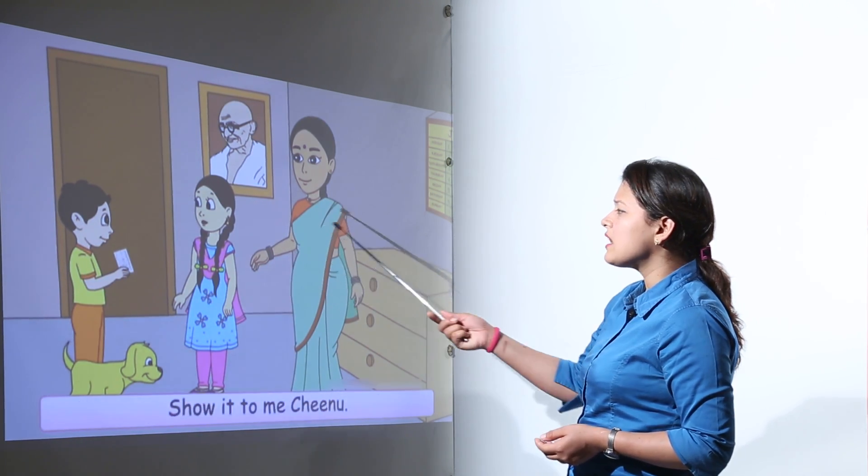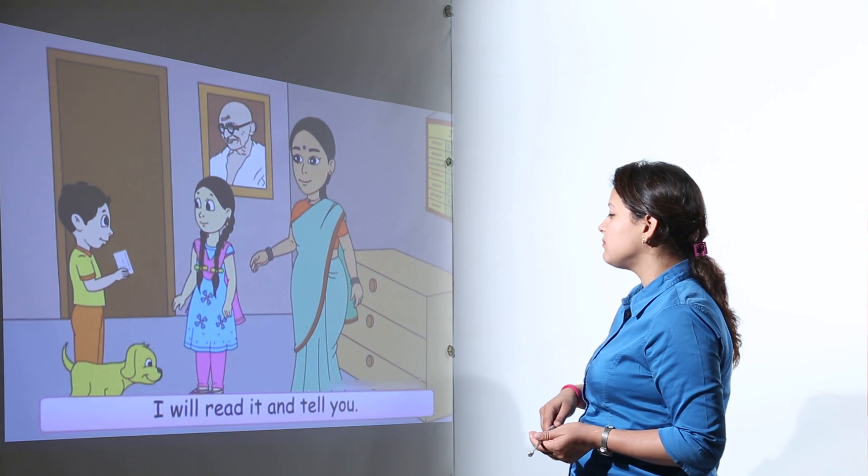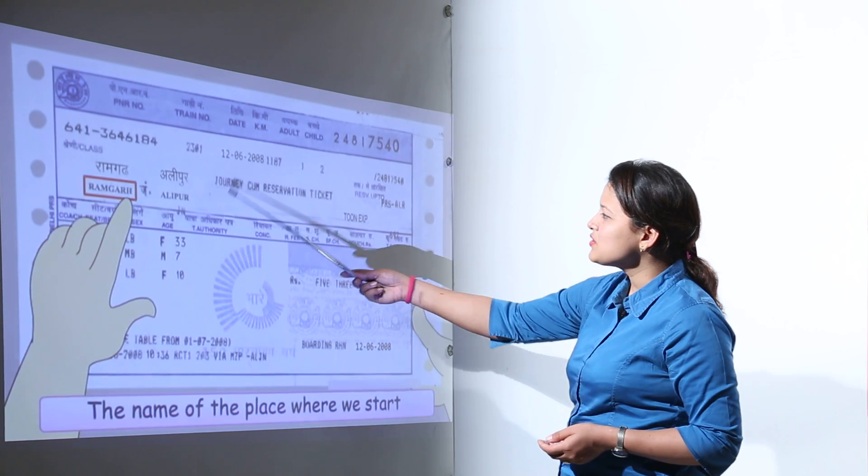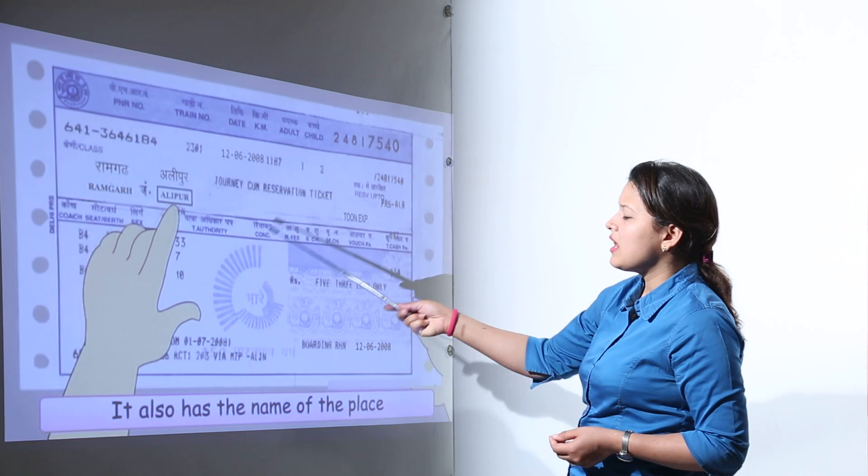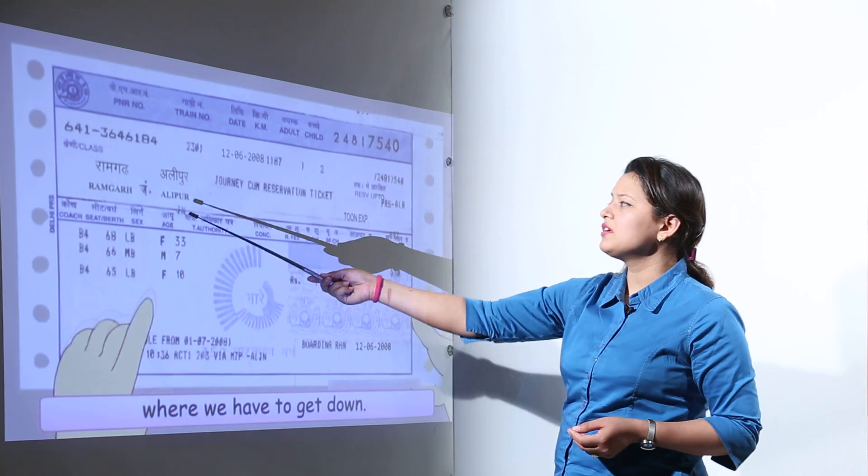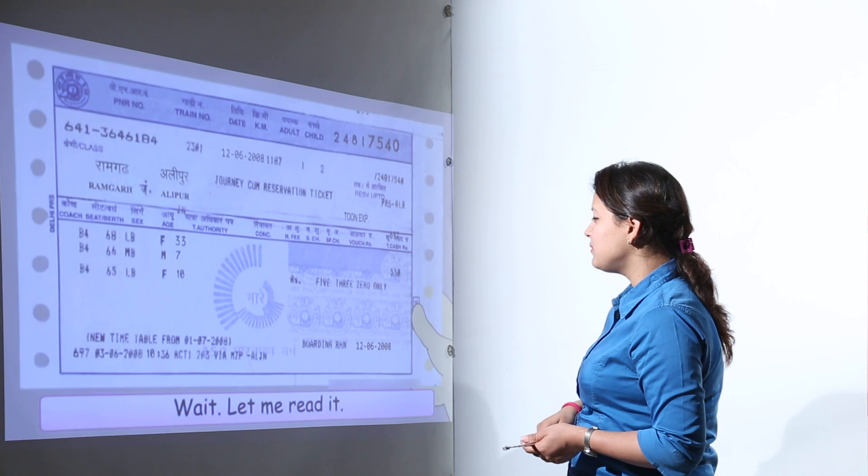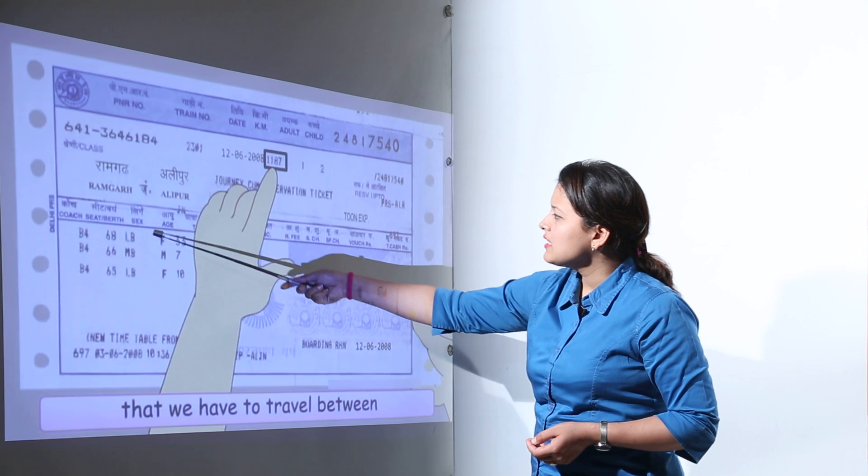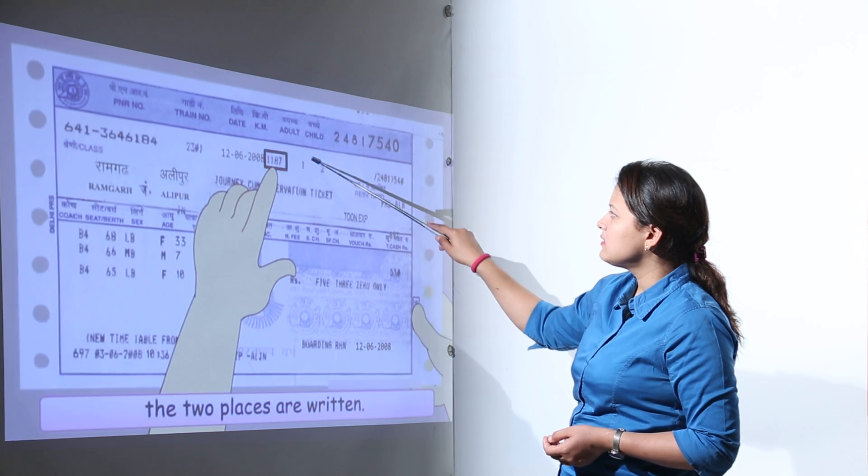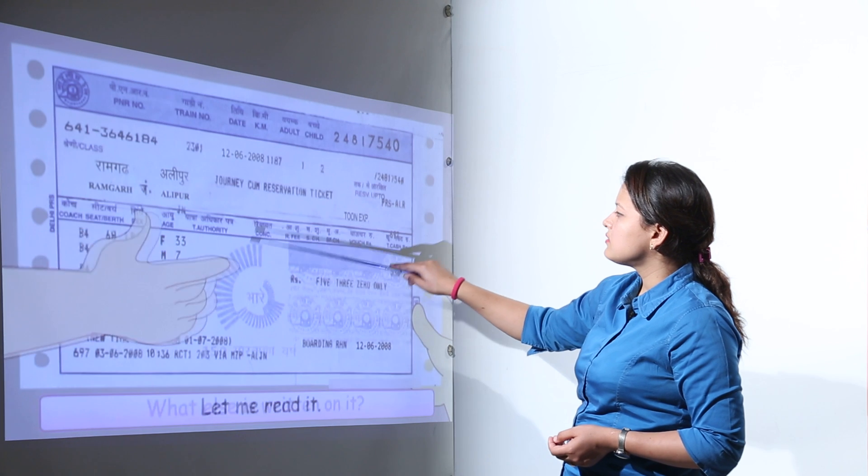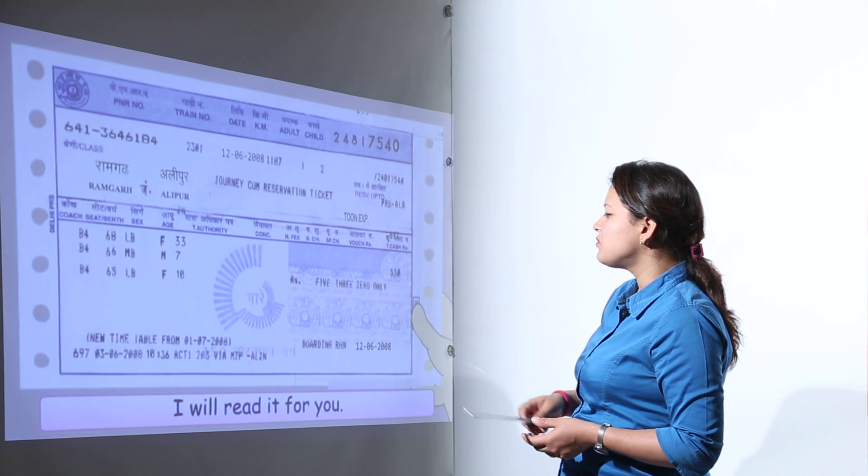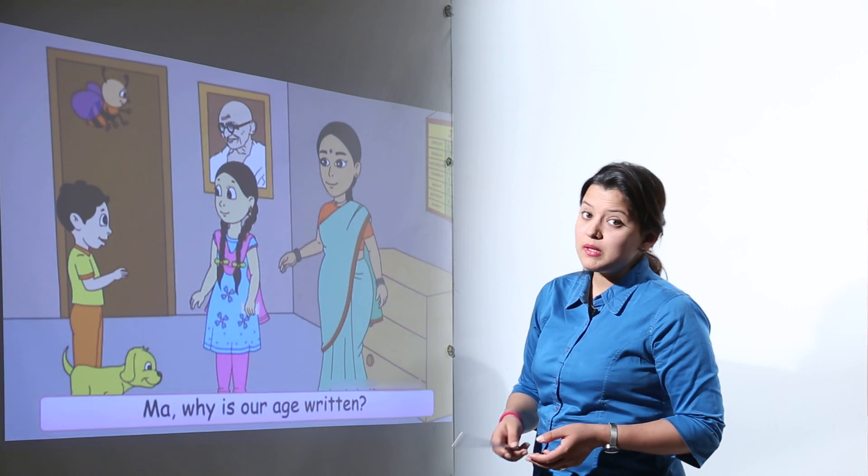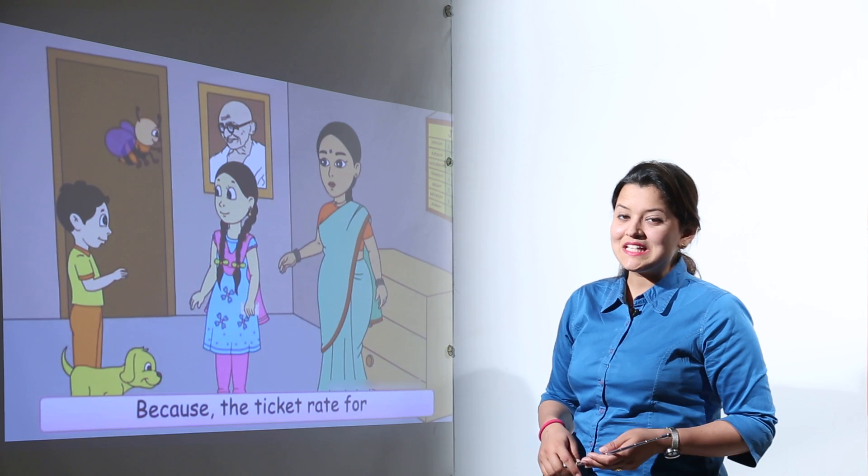You can have a look at the ticket of this train now. So many things are written on the ticket. Let us read and see. First is the journey - the source and destination. They are starting from Ramghar and going to Alipur. Here is the train number written, seat numbers written. You can see the price of the ticket, total price. The age of the family members traveling is also written.